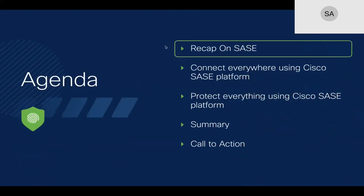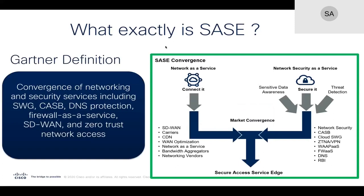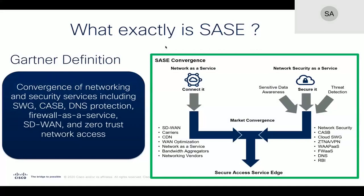The recap here is going to talk about what exactly SASE is. If you look at the definition, SASE contains multiple technologies. On the left side, it is network-as-a-service technology, which contains SD-WAN and carriers, WAN optimizations, or bandwidth aggregators. On the right side, it is more on the network security-as-a-service, which covers cloud security, firewall-as-a-service, and so on. In this presentation, we're going to focus on both sides — network and security.